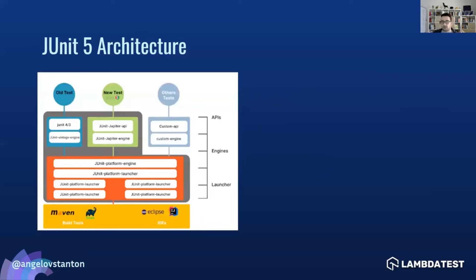Here is the architecture of JUnit 5. Let's first discuss the JUnit platform. The JUnit platform defines the test engine API for developing a testing framework that runs on the JVM, the Java Virtual Machine. It provides a console launcher to launch the platform from the command line, plus a JUnit 5-based runner for running any test engine on the platform in a JUnit 4-based environment.